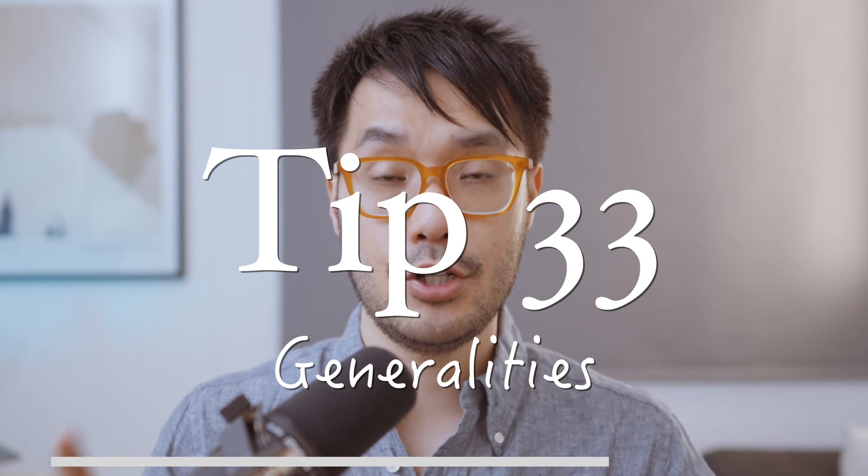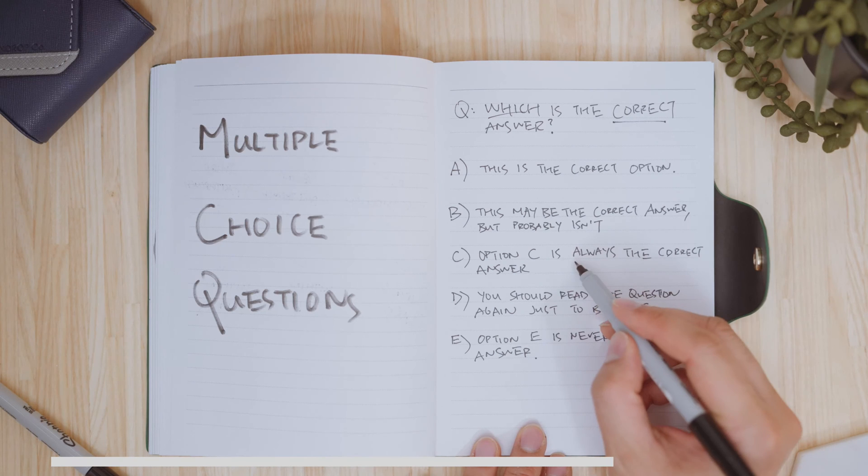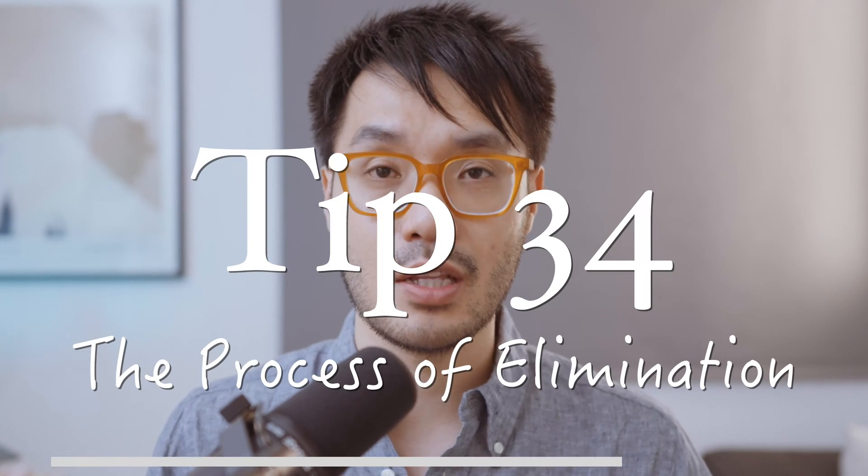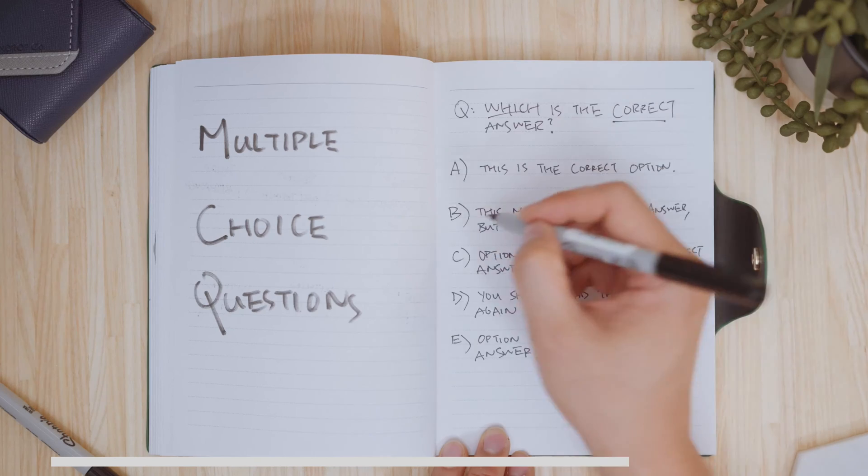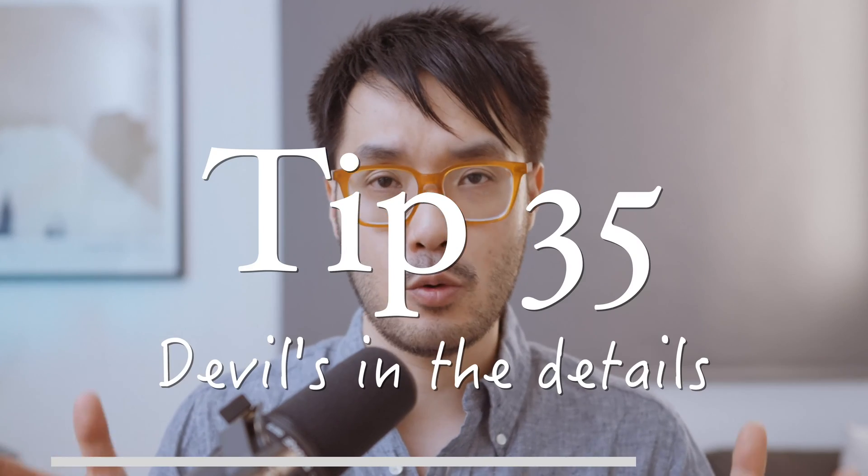Tip 33: generalities. Look through answer options with never and always—these tend to be wrong because there's just less chance that things are more universal. Read through those options first and be confident crossing them off your list. Tip 34: the process of elimination. It's easier logically to find out why answers are wrong than finding all the reasons that an answer is right. There's also great validation in crossing out wrong answers—momentum and being active rather than being paralyzed by uncertainty. Tip 35: devil's in the details. How different do the answer options look to each other? If there are any options that look similar with one key difference, that may hide a clue for the real answer.